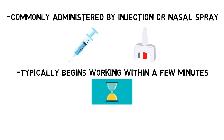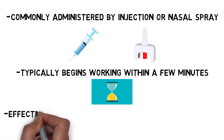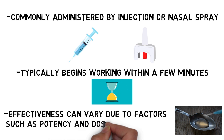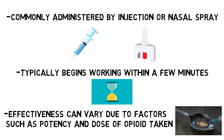The effectiveness of naloxone can vary due to a number of factors, including the potency of the opioid in the patient's system and the dose of opioids they administered. Repeated doses of naloxone are sometimes used to keep the patient from re-experiencing effects of opioids still present in their system after naloxone begins to wear off.